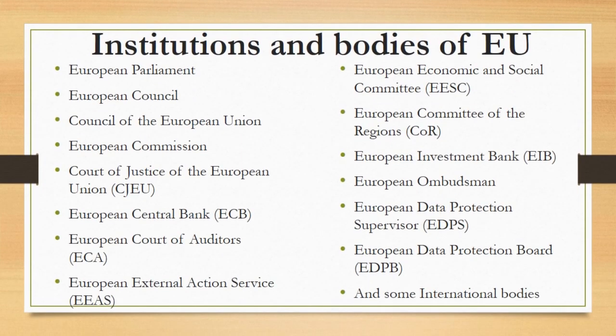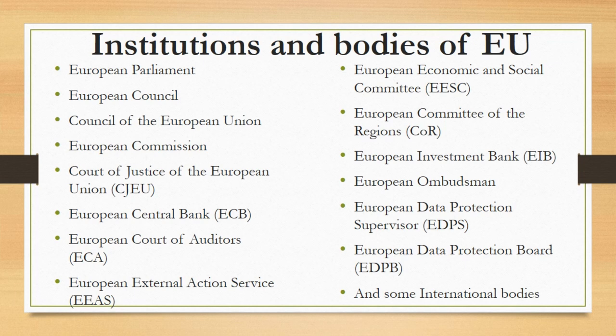Institutions and bodies of the European Union: There is a wide range of institutions and bodies upon which the EU is based, including the European Parliament, European Council, Council of the European Union, European Commission, Court of Justice of the European Union, European Central Bank, European Court of Auditors, European External Action Service, European Economic and Social Committee, European Committee of the Regions, European Investment Bank, European Ombudsman, European Data Protection Supervisor, European Data Protection Board, and some international bodies.